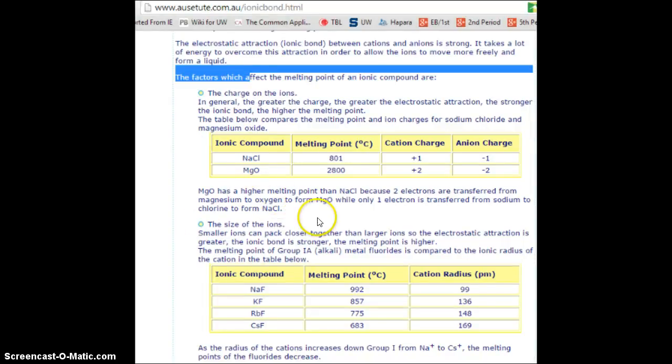The other thing that is important is the size of the ions. So let's take a look at this. Here there are four fluoride compounds: sodium, potassium, rubidium, and cesium. These are all alkali metals, the cation. And this is going down the periodic table, sodium, potassium, then rubidium, then cesium. So as I go down the periodic table, the ions are getting bigger and bigger and bigger.